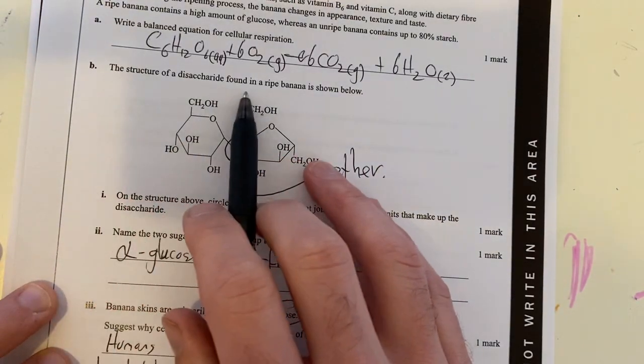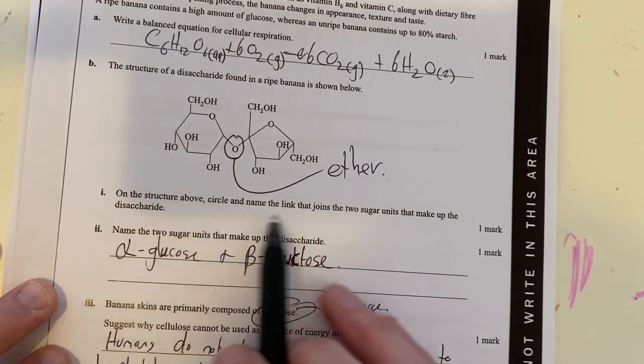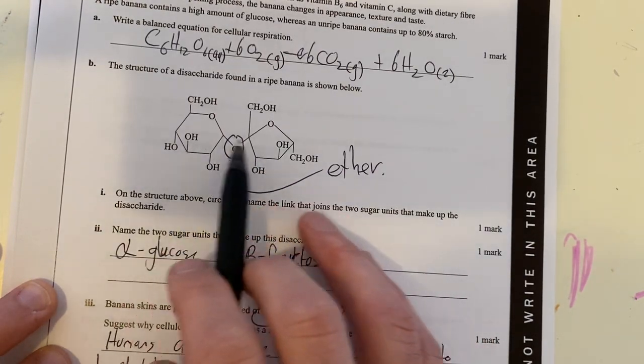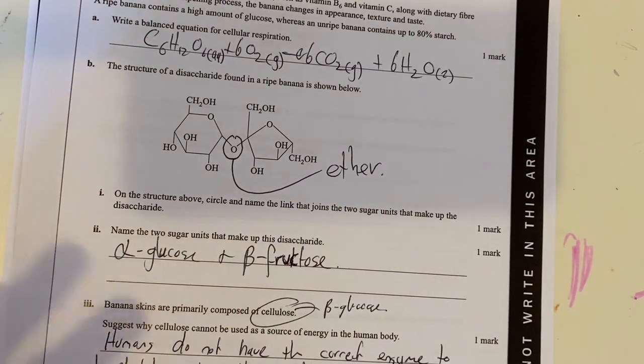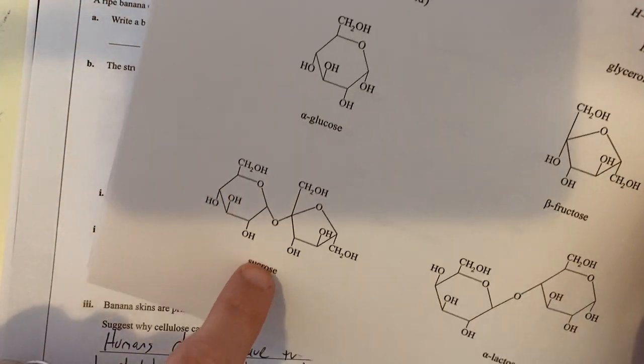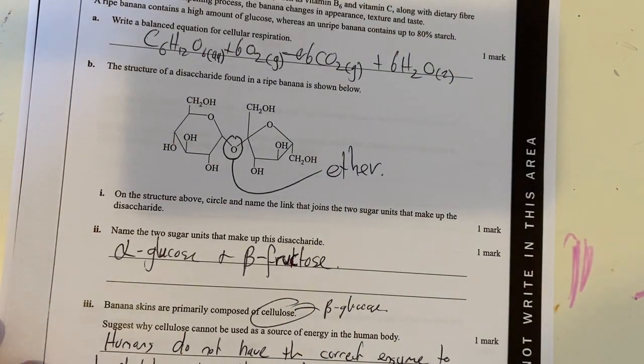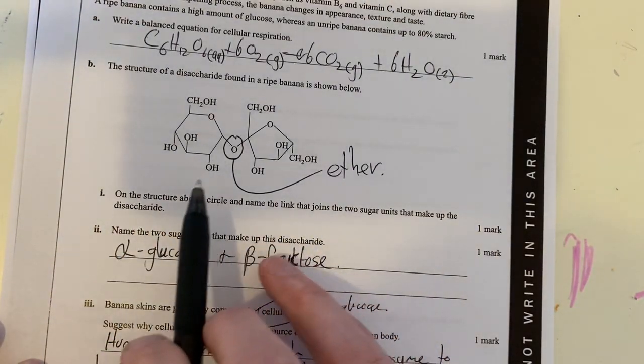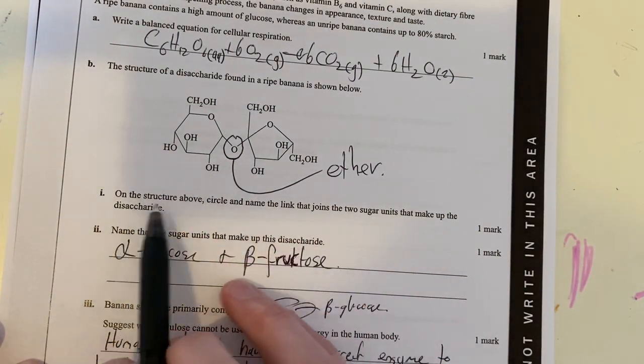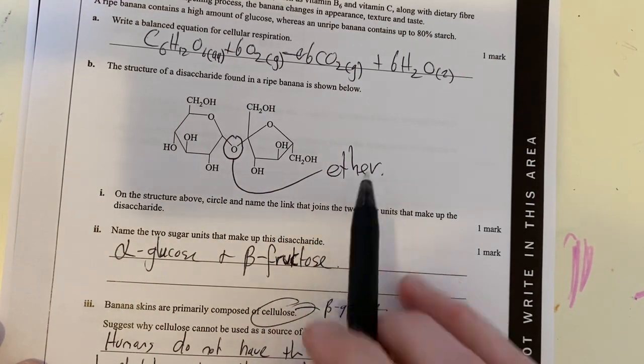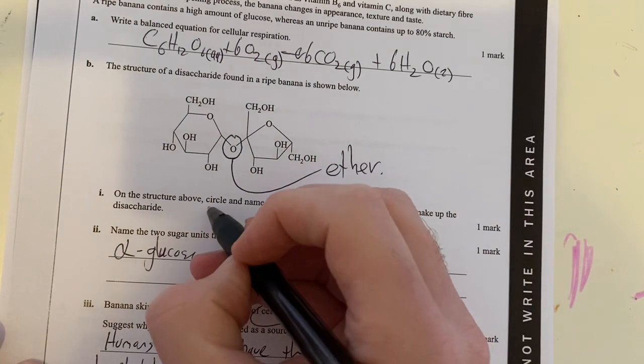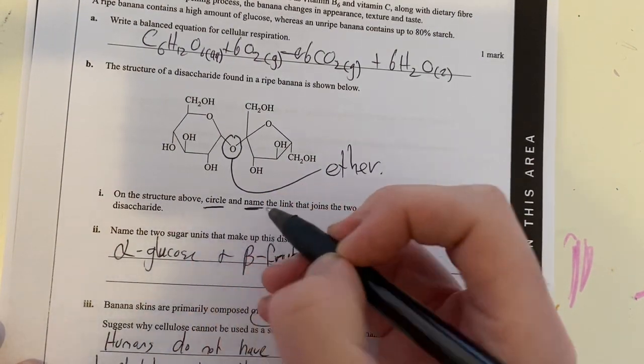The next question was finding the linkage that connects my two monosaccharides. I noticed straight away in my data booklet it's called sucrose, but I didn't need that. All I needed to do was circle the linkage and name it, so I circled it and highlighted it as being ether. Important thing here is to note that it asked you to circle and name, so I had to do both.